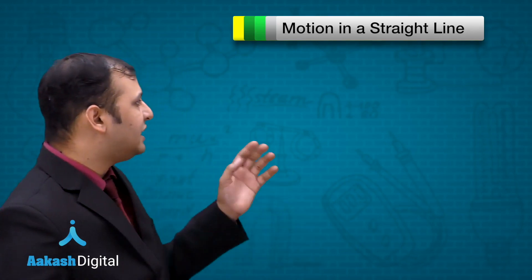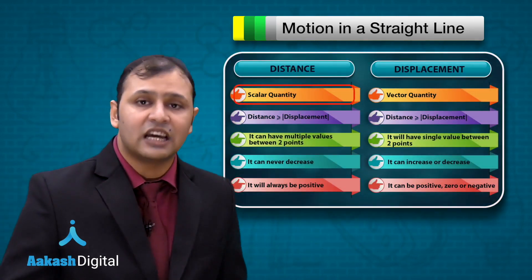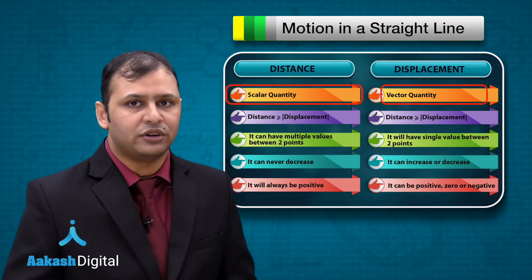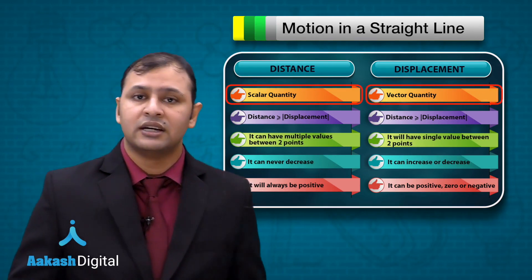If you can see in this table, distance is a scalar quantity and displacement is a vector quantity. We are very much clear on this.